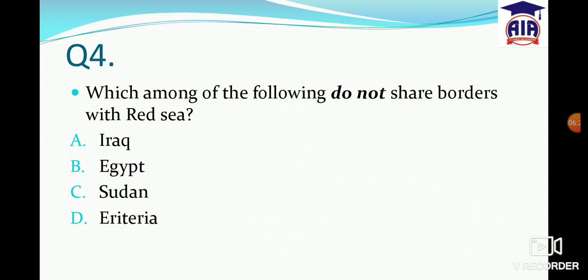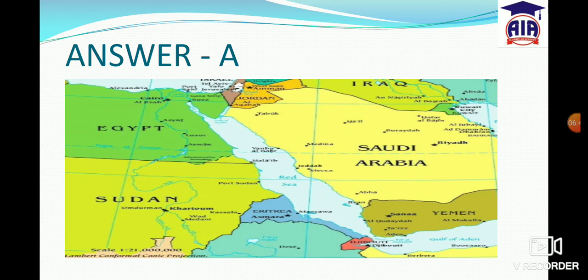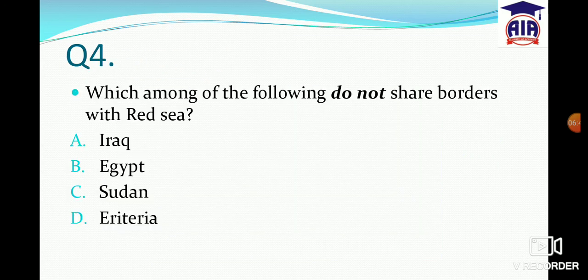Next question: Which among the following does NOT share a border with the Red Sea? Options: Iraq, Egypt, Sudan, Eritrea. The answer is A — Iraq does not share a border with the Red Sea.